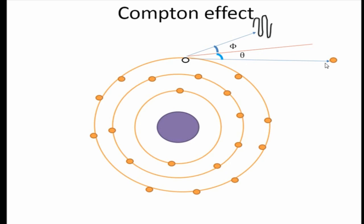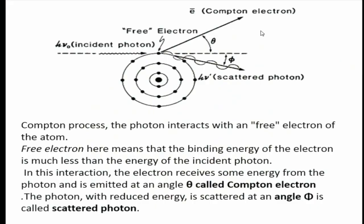As compared to the photoelectric effect, in which only a photoelectron is ejected, in the Compton effect two things are ejected: one is the scattered photon and another is the electron.